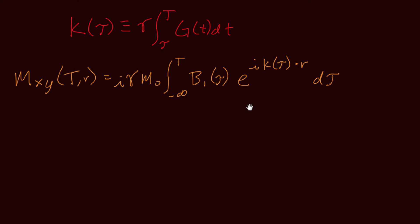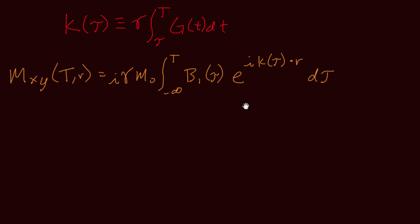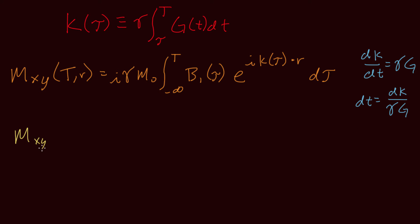In the Fourier transform, the complex exponential contains the product of two conjugate variables, as we have here, but the function to be transformed must be a function of one of those variables, and the integral is over that same variable. So recall that k is the time integral of the gradients, which means that dk dt equals gamma g, or dt equals dk over gamma g. Substituting this in, we have an integral over k, and the integration is over all k-space locations that were visited by the trajectory prior to time capital T.